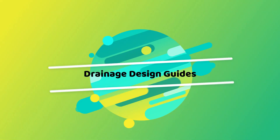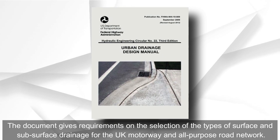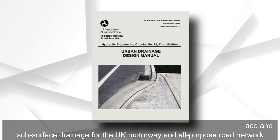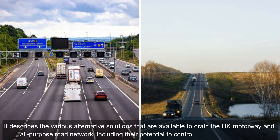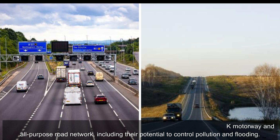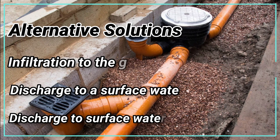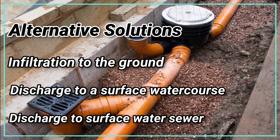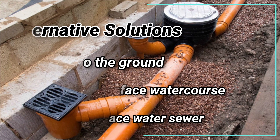Drainage design guides provide requirements on the selection of surface and subsurface drainage types for the UK motorway and all-purpose road network. They describe alternative solutions available to drain the network, including their potential to control pollution and flooding. Some alternative solutions include: infiltration to the ground, discharge to a surface water course, and discharge to a surface water sewer.